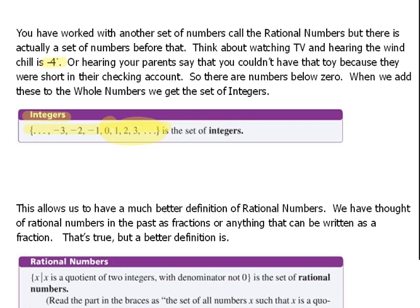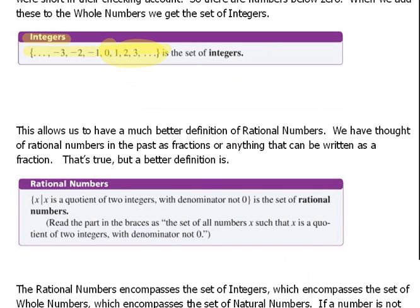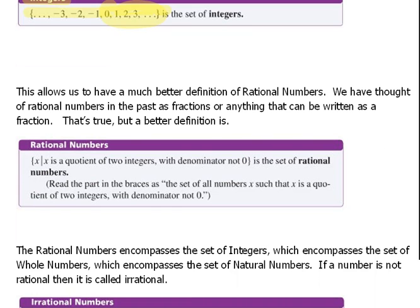All right, now that gives us a much better definition of the term rational numbers. Generally, we think of the rational numbers as being fractions or anything that can be written as a fraction, and that's true. But a better way to say it is that it is a quotient of two integers with a denominator not zero. So this is a ratio or a quotient, something like four over five. Four is an integer and five is an integer. When we write them as a quotient or as a ratio, technically it's called a rational number.